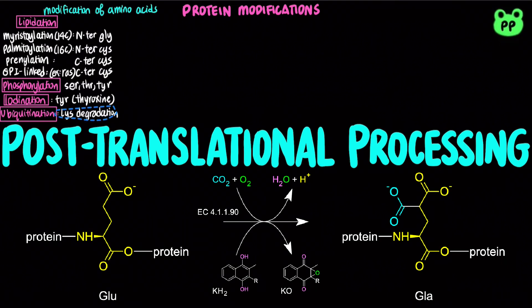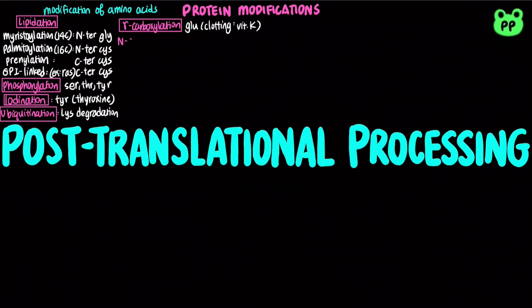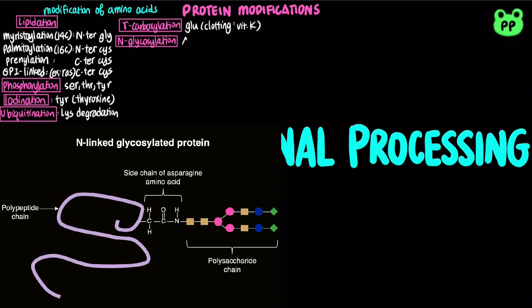Carboxylation of the gamma carbon occurs at the glutamate residue. It is essential for the formation of the blood clotting factor prothrombin, which requires vitamin K. Glycosylation refers to the attachment of carbohydrate side chains of glycoproteins, which can either be attached to nitrogen or oxygen. N-glycosylation occurs at the asparagine residue, in the asparagine-X-serine or threonine sequence, where X is any amino acid except proline.